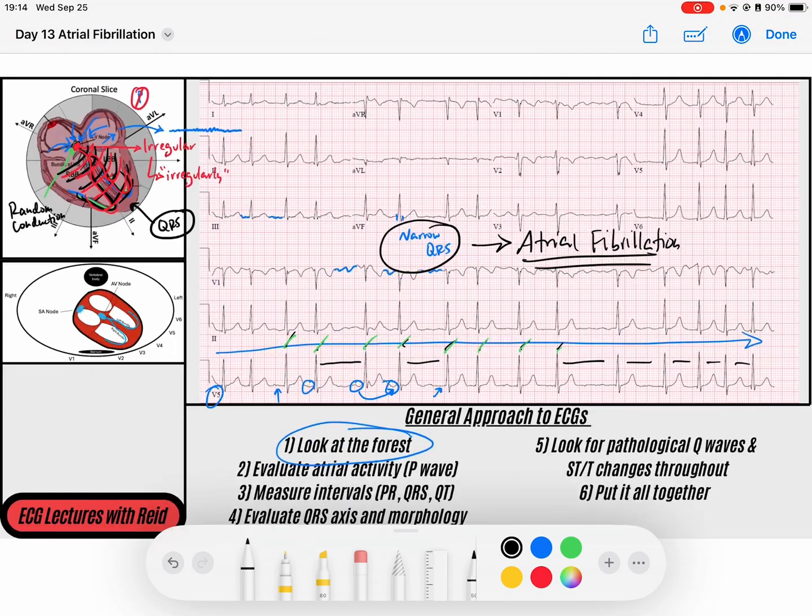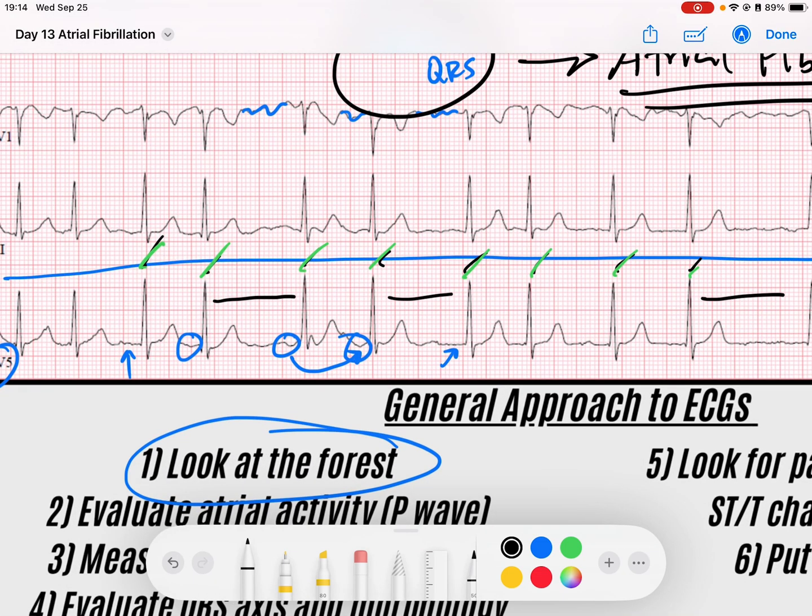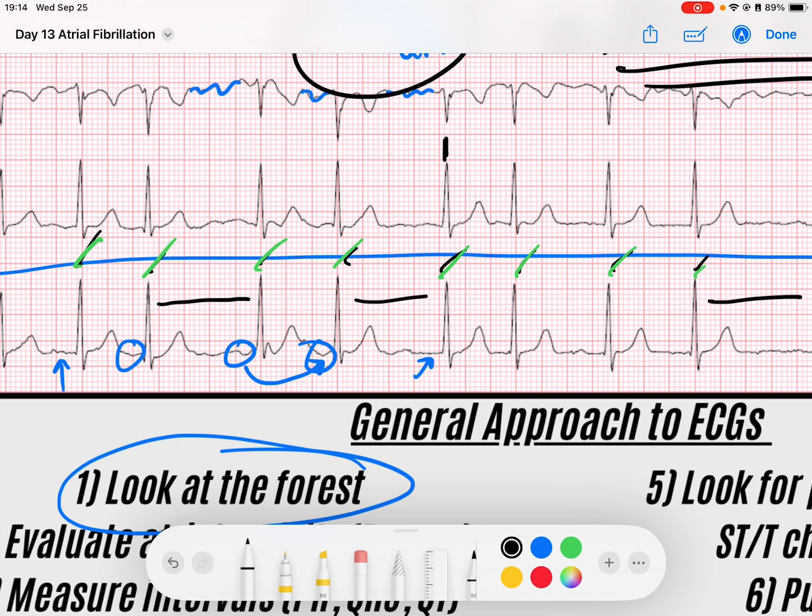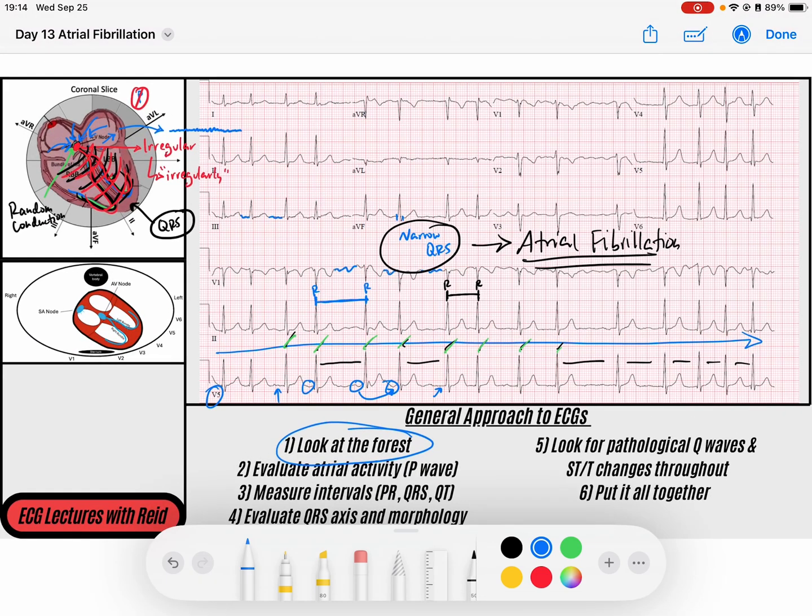The interesting thing about AFib is that we now have to figure out the rate of the AFib. Now if I want to measure the rate, how do I measure the rate? If I measure the rate between this QRS and this QRS, that R to R interval is going to be different than if I measure it from this QRS to this QRS. So now you're saying, how do I measure the rate of this? Well, if I know that my EKG strip here is 10 seconds, this is 10 seconds long, if I count the number of QRS complexes...